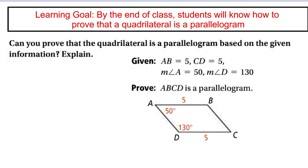Now that we know these six properties, can we prove this shape is a parallelogram given the provided information? Angle A is 50, angle D is 130, AB is 5, and DC is 5. Since 50 plus 130 equals 180, angles A and D are supplementary — same-side interior angles — so AB is parallel to DC. And since AB and DC both equal 5, they are congruent. That's the sixth property: one pair of opposite sides is both parallel and congruent, so this is a parallelogram.